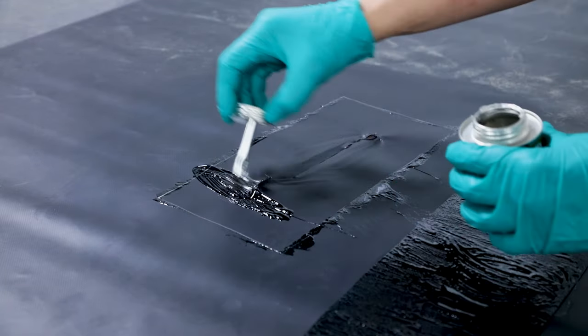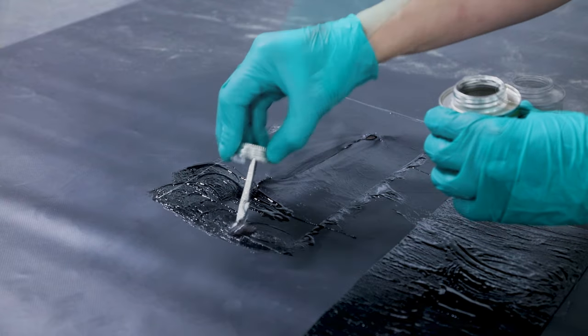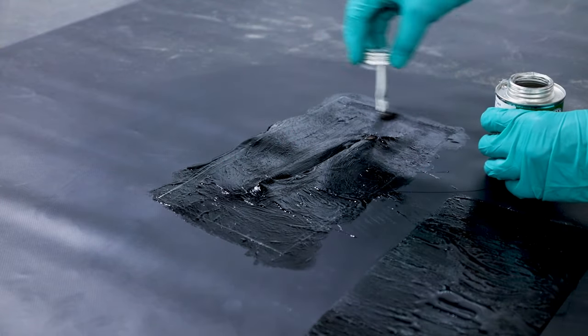Then apply an even coat of vinyl cement in traced outline on tarp. Allow tarp patch to dry 2-5 minutes or until tacky.